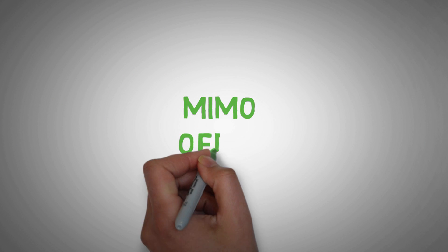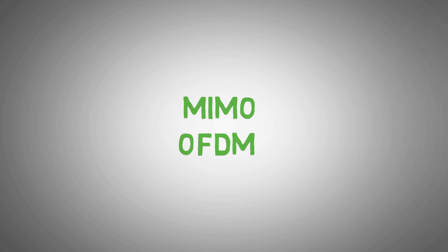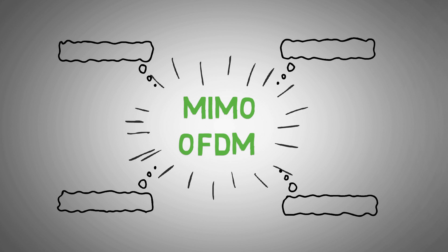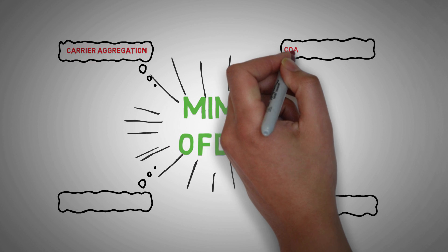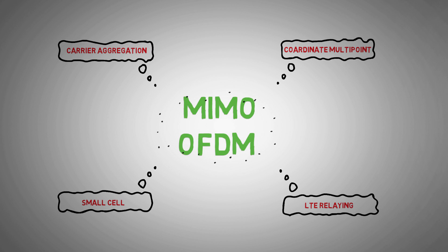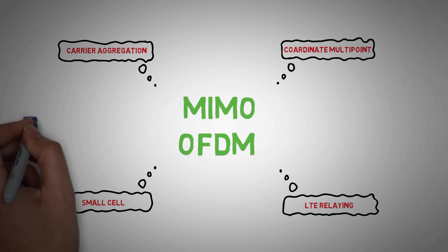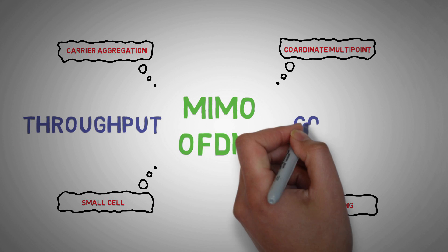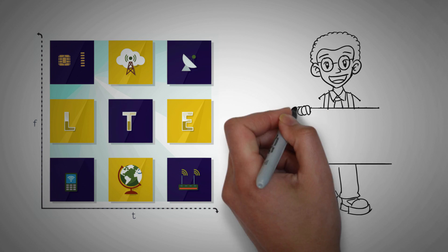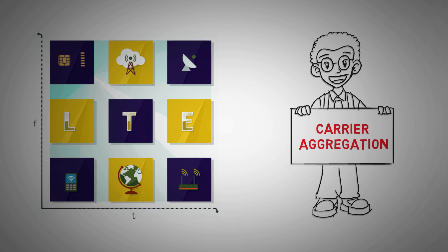MIMO and OFDM are two base technologies that will be enablers. Along with these, there are a number of other techniques and technologies such as carrier aggregation, coordinated multipoint, LTE relaying, etc., which will be employed to improve throughput and coverage. Welcome back to the fundamentals of 4G. Today, we will be discussing carrier aggregation.